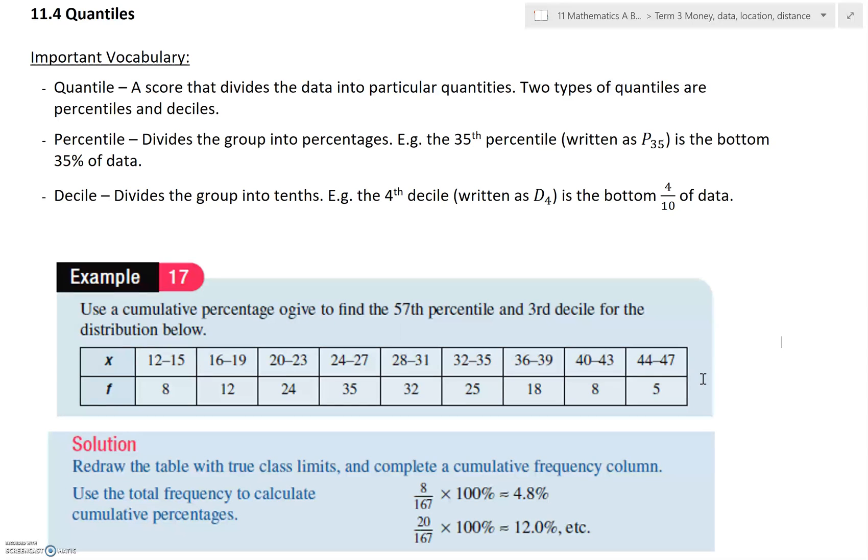A decile divides the group into 10. So dec, decade, decimeter, dec in Latin means 10. So that's where the decile comes from. So for example, the fourth decile is written as D4. It's the bottom four-tenths of the data. So again, going from the bottom up.